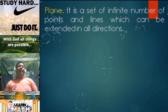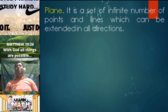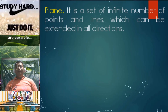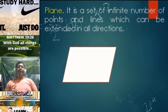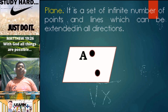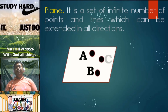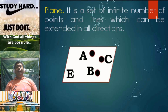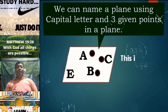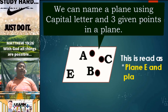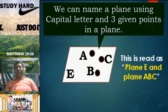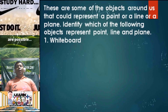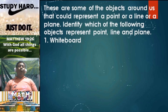Consider a plane. It is a set of infinite number of points and lines which can be extended in all directions. Consider the given figure here — we have point A, point B, and point C. We can simply name this plane using the three given points. This is read as plane E, and plane ABC. Now let's have an application on the representation of the undefined terms: point, line, and plane.